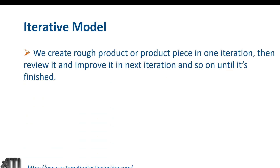We create a rough product or a piece of the product in one iteration, then review it and improve it in the next iteration, and so on until it's finished. It works on a module-by-module basis — we get reviews from the customer after each module, working through module one, module two, module three, and so on until we get the final build.